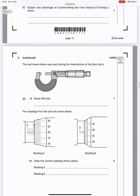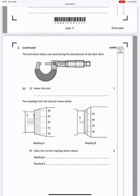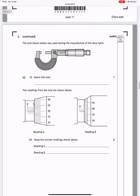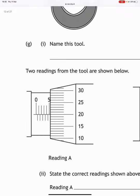The tool shown below was used during the manufacture of the door latch. Name this tool. Well this is a digital micrometer. Two readings from the tool are shown below. If we look at reading A, you can see that on the left hand side scale it's somewhere between 5.0 and 5.5. Then the vertical scale lines up to the left hand scale at 20. That's 20 hundredths. So 5 millimetres plus 20 hundredths is 5.2 millimetres.